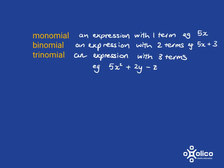And then we have some algebraic expressions that have special names. A monomial is an expression with only 1 term, for example, 5x. A binomial, bi, like in bicycle, means 2. It's an expression with 2 terms. So here we've got 5x plus 3, 1, 2 terms.